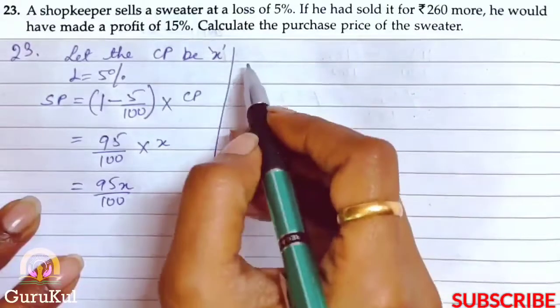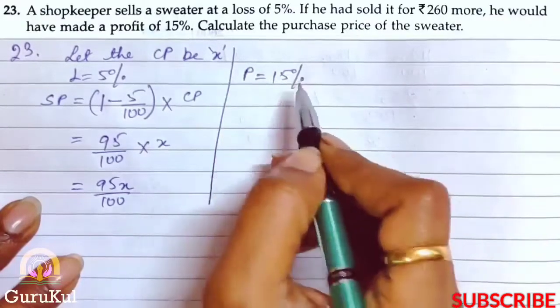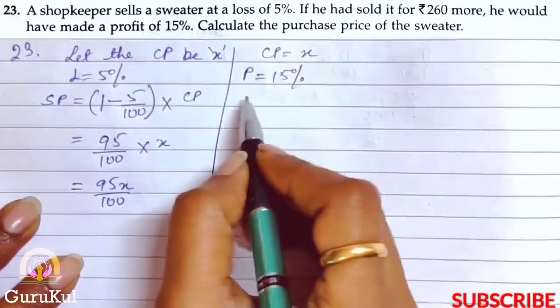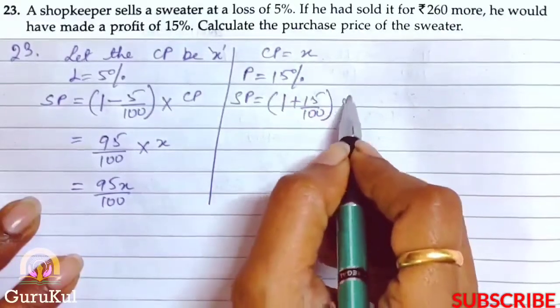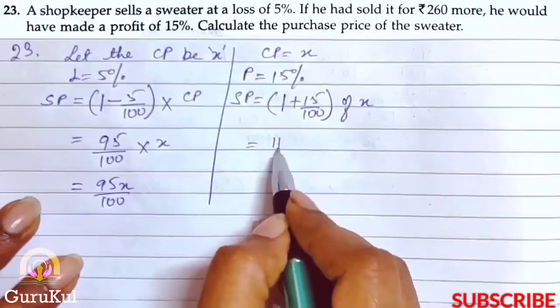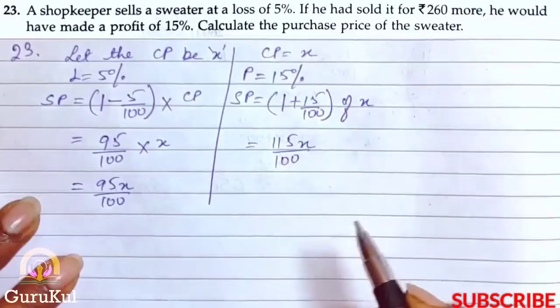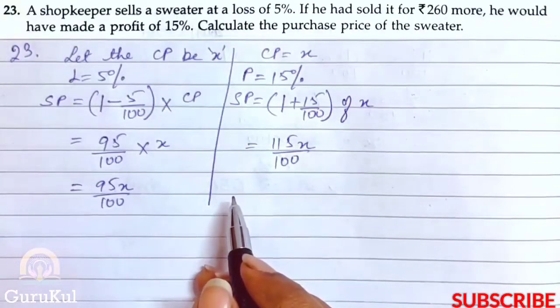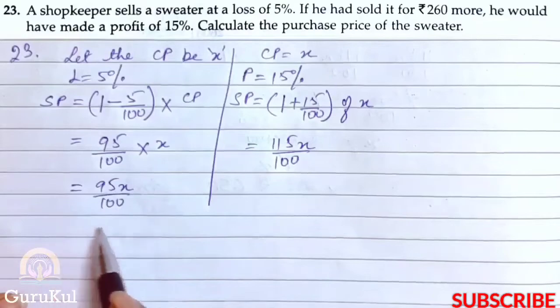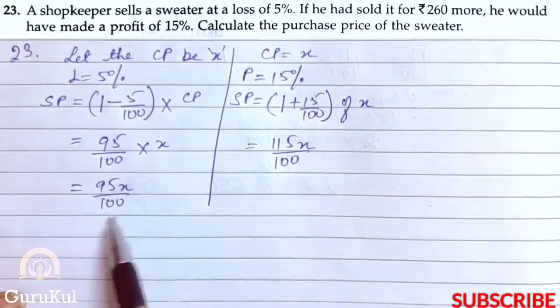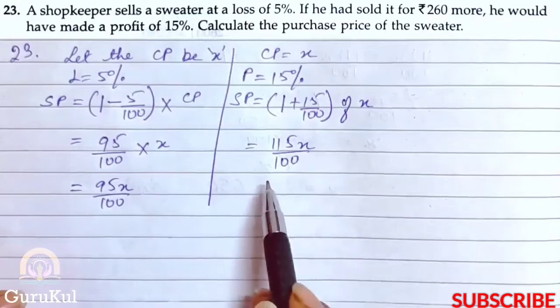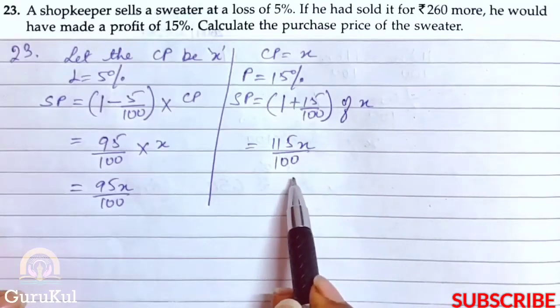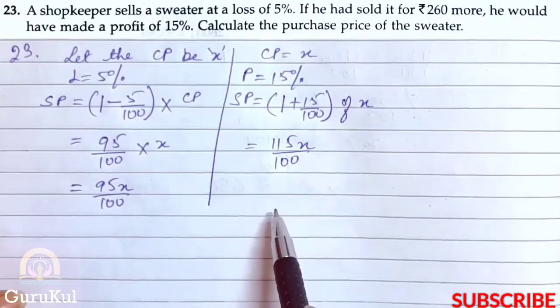In the second case, he made a profit of 15%. CP is the same x. So SP will be 1 plus 15 by 100 of x, which equals 115x by 100. Now, the shopkeeper sells at a loss of 5% with SP of 95x by 100. If he adds 260 rupees to this SP, his new SP would be 115x by 100 at 15% profit.